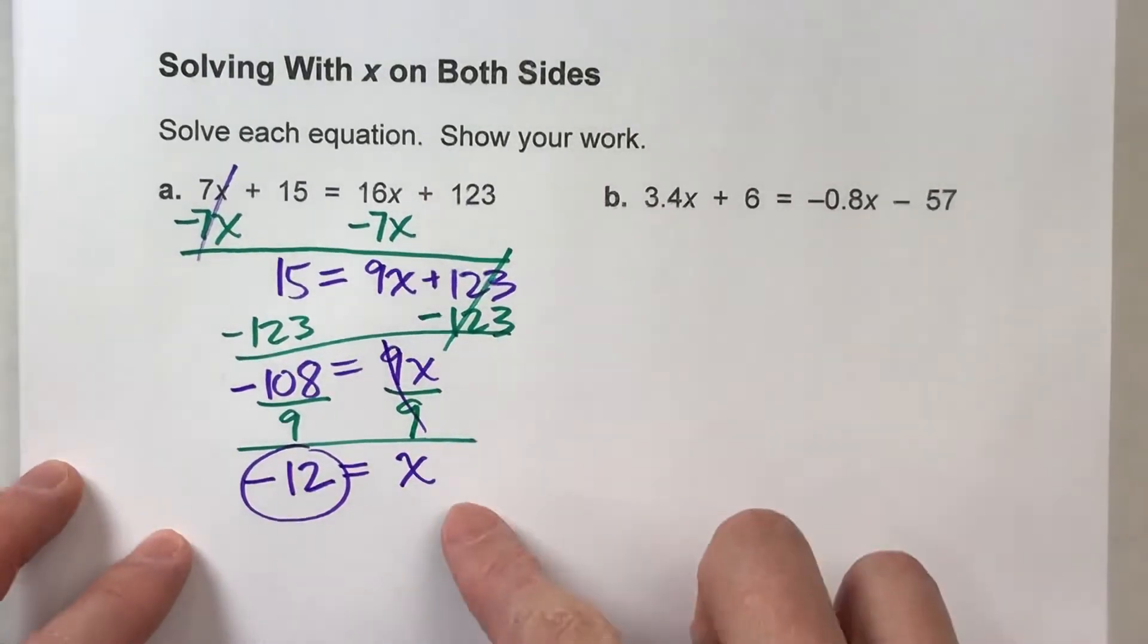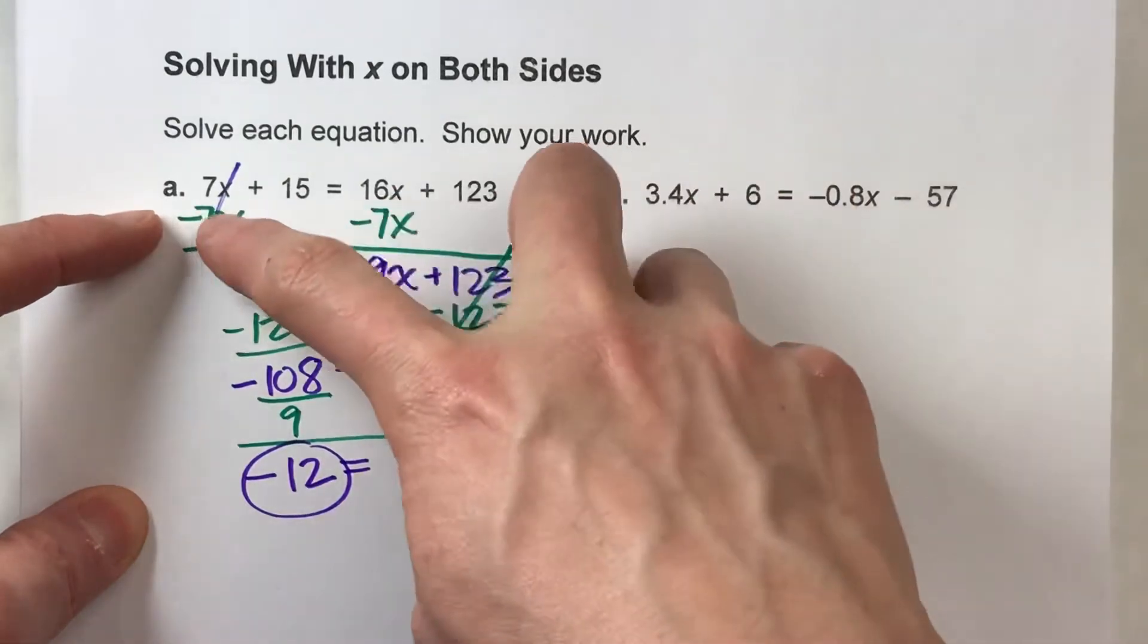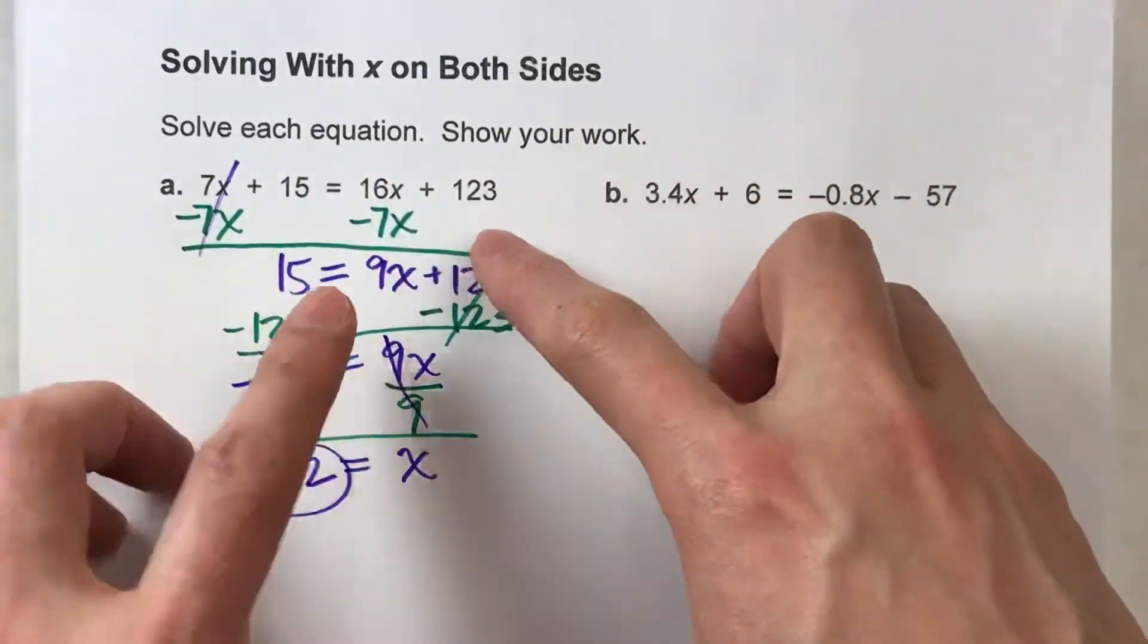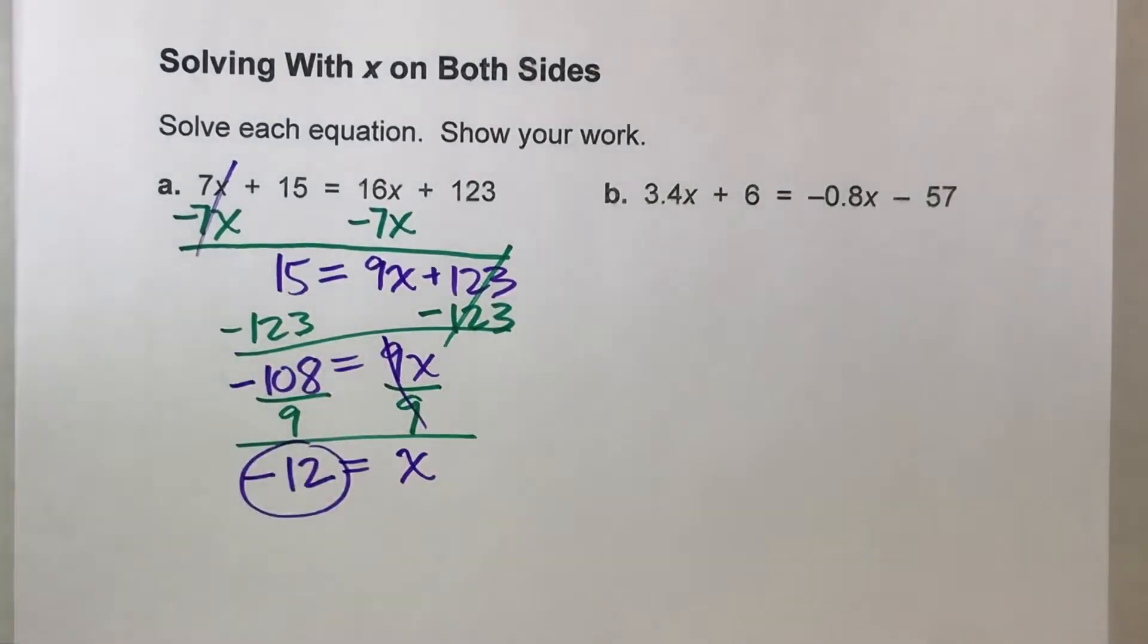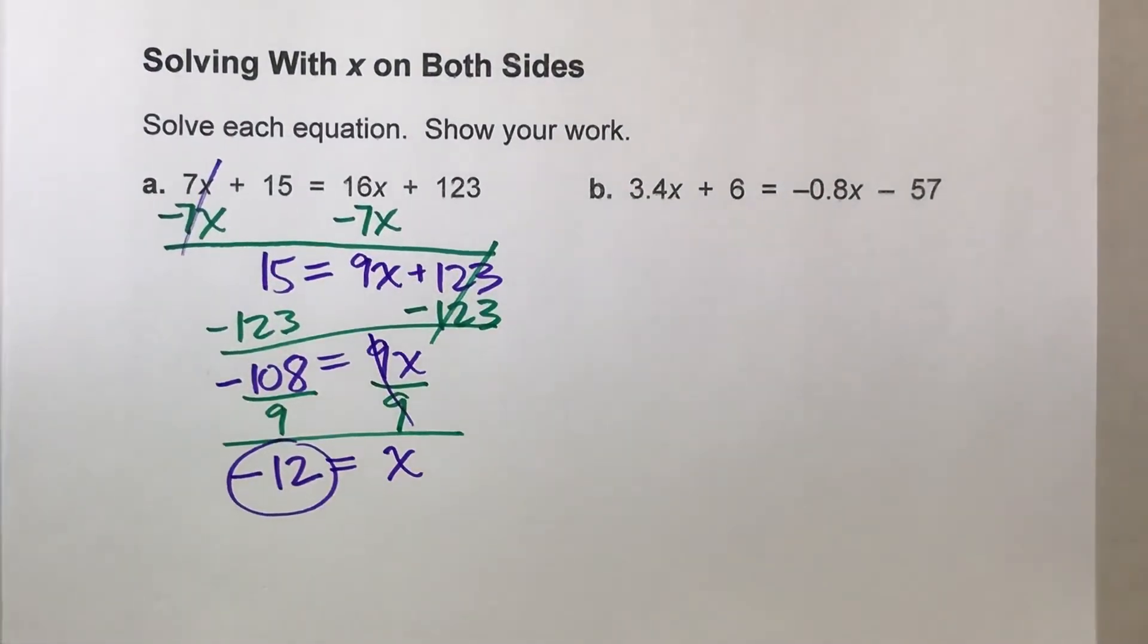Alright. So notice the only new step here is we've got x's on both sides, so I subtract all the x's off one side. And once I have x's on just one side of the equal sign, then I can really start focusing in and solving.